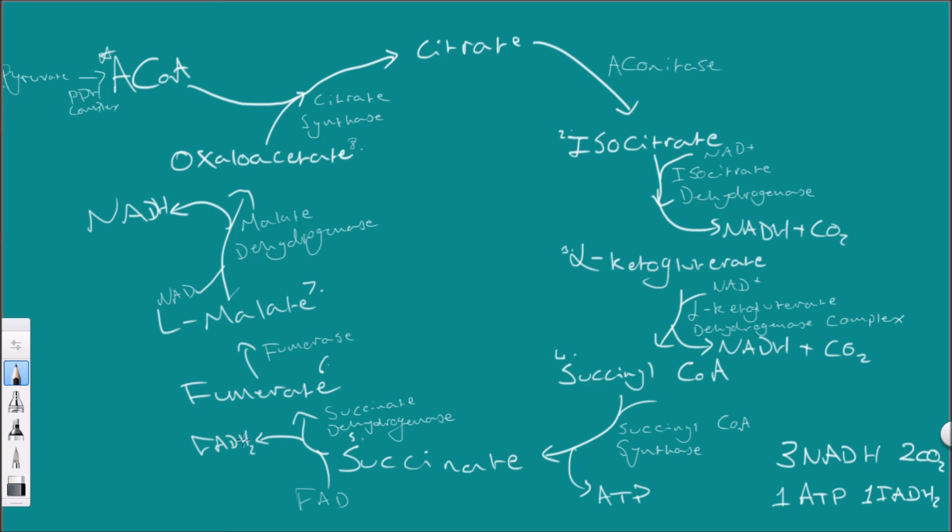Then the succinate formed is dehydrogenated by succinate dehydrogenase with those hydrogen ions that have been dehydrogenated from the succinate going to FADH2, and that will produce fumarate. The fumarate is then converted into L-malate by fumarase, nice and easy to remember. And then the L-malate is further dehydrogenated with hydrogen going to another molecule of NADH to form oxaloacetate by the enzyme malate dehydrogenase.